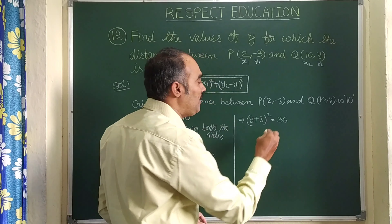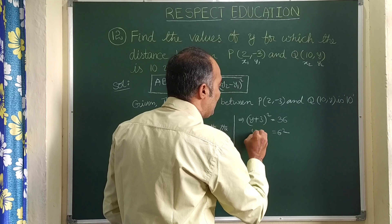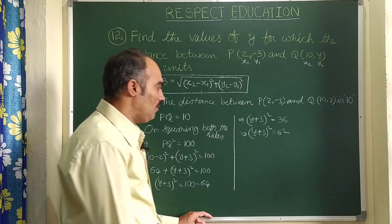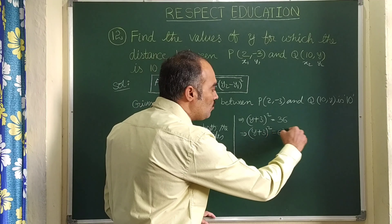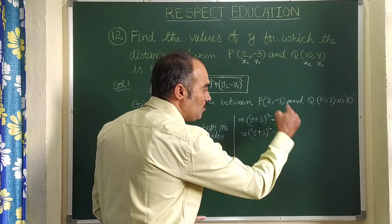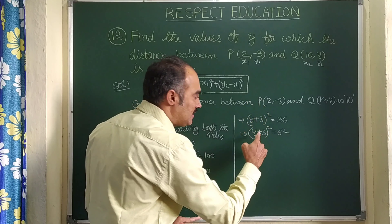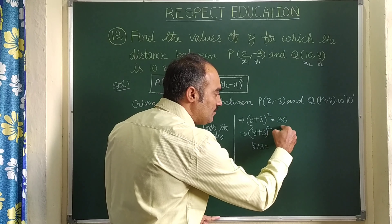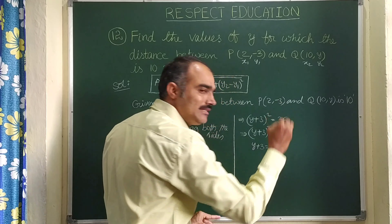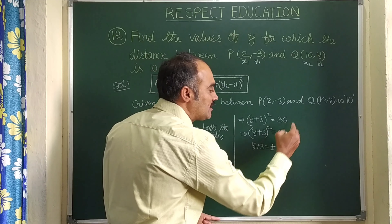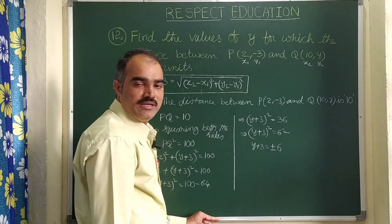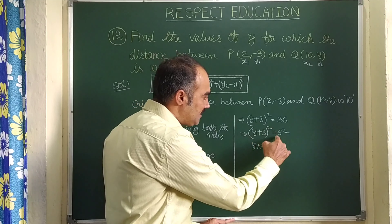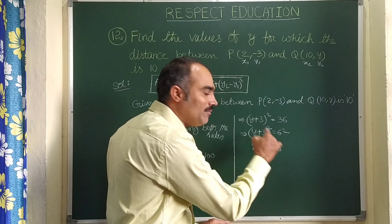36 can be written as 6². So we have (y + 3)² = 6². On taking square roots on both sides, the square root and square cancel, giving y + 3 = ±6.